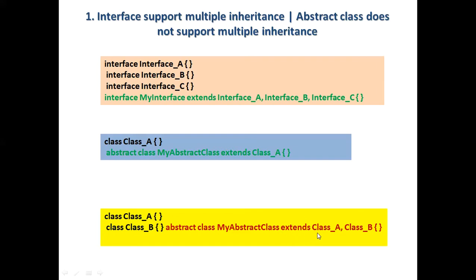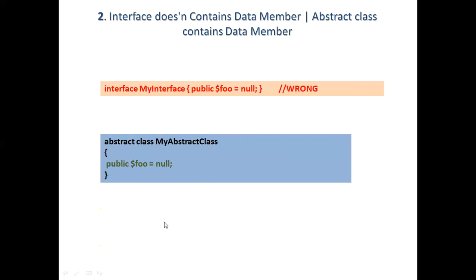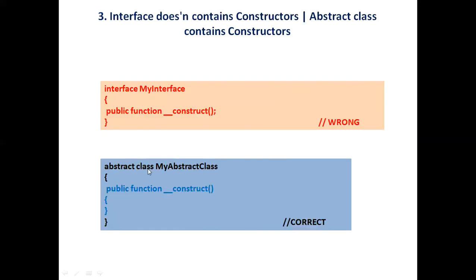Second point: interface does not contain data members, abstract class contains data members. So this is wrong - if in interface you declare a variable, it is wrong. While in abstract class you can declare a variable, that is possible in PHP.